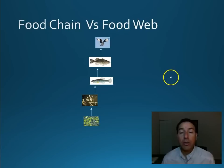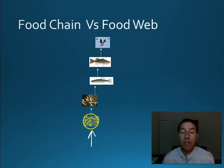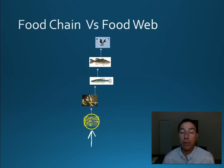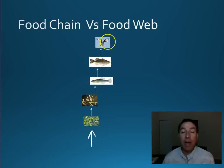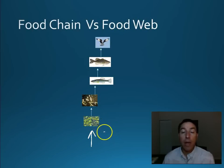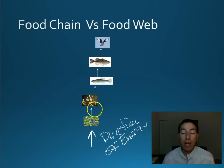When energy enters an ecosystem, it enters at the lowest level — we call these producers. The way we symbolize how energy flows through an ecosystem is by showing what we call a food chain. A food chain is a very simplistic one-way path of energy as it flows through the ecosystem. Energy starts at the producers, goes up to a primary consumer, then another consumer, and ultimately the top-level consumer — in this case an osprey. Remember, the arrows show direction of energy flow, and that's important. A lot of people get this confused and put the arrows the wrong way.